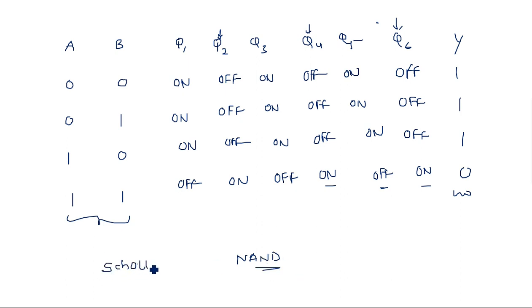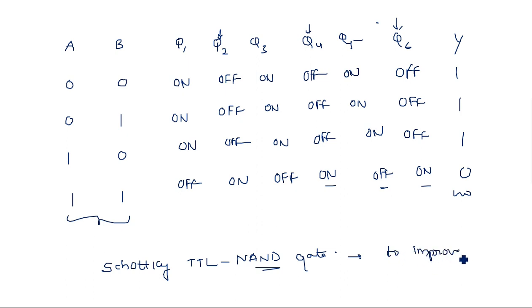This NAND gate is made up of Schottky TTL. The main purpose of using Schottky TTL is to improve speed of operation. Speed of operation is improved by using Schottky diodes — Schottky transistors remove the excess charge carriers, improving the speed of operation compared to normal transistors.